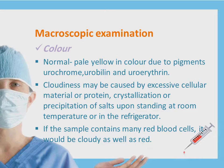Starting from the color: it is usually normal pale yellow in color due to the pigments urochrome, urobilin, and uroerythrin. Cloudiness may be caused by excessive cellular material or protein crystallization, or may be due to precipitation of solids upon standing at warm temperature or putting the sample in the refrigerator before doing the analysis. If the sample contains many red blood cells, it would be cloudy as well as red.